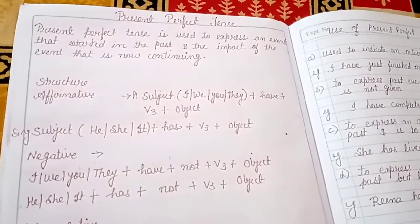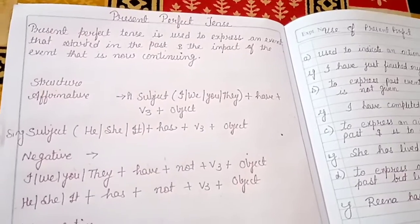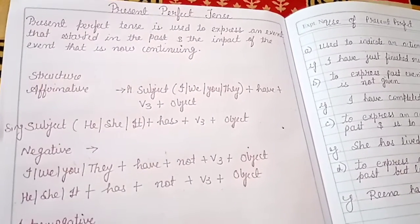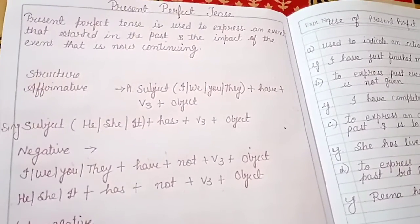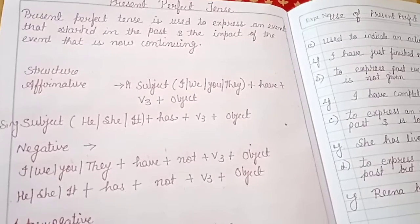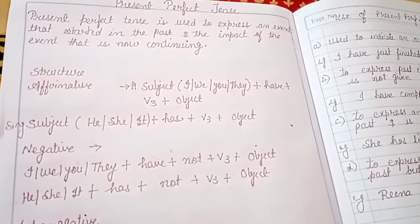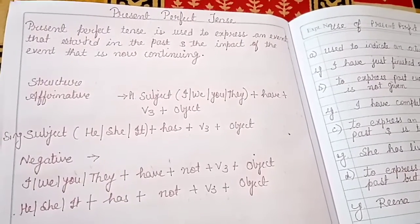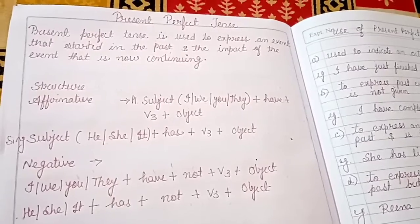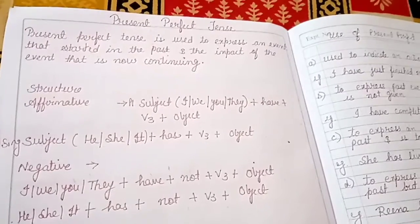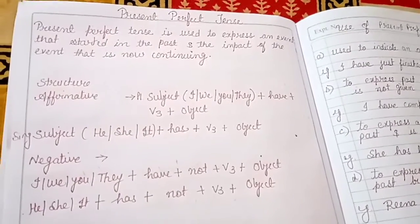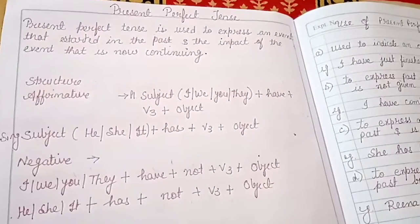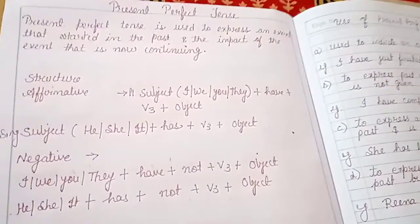So, what is Present Perfect Tense? Present Perfect Tense means it is used to express an event that started in the past and the impact of the event is now continuing. It means that any action is in the past, but its impact is now continuing — the present impact is shown here.